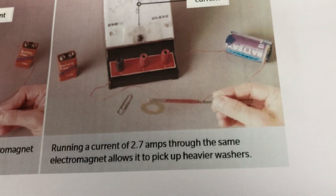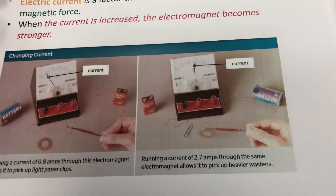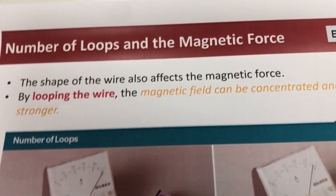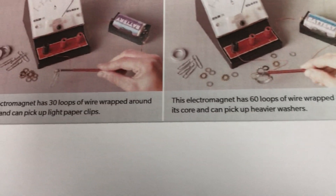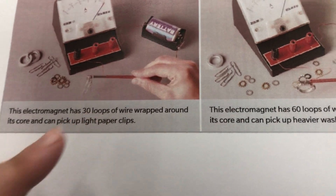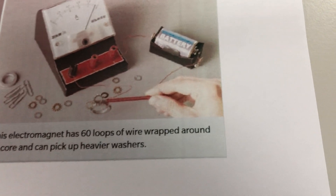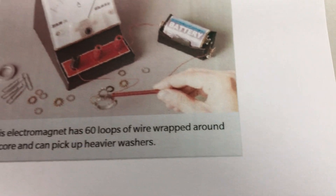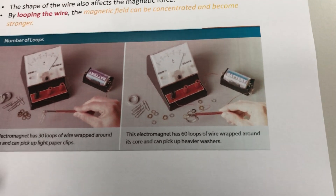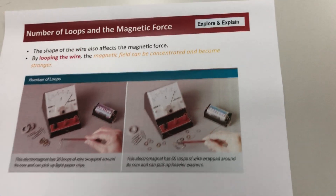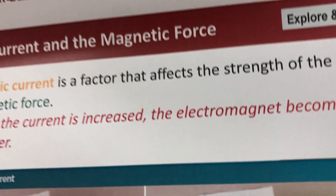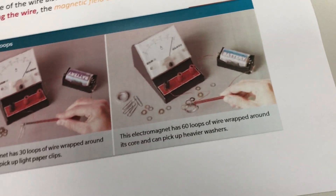The second factor that affects electromagnet strength is the number of loops. With 30 loops you can pick up a few paper clips, but with 60 loops you're able to pick up a lot more. So the two things that affect how strong an electromagnet is are: the electric current and the number of loops.